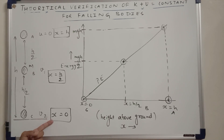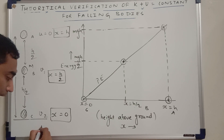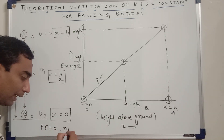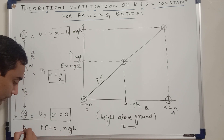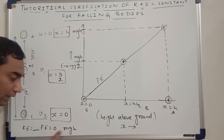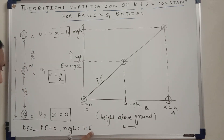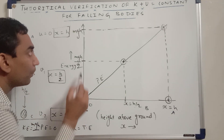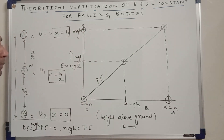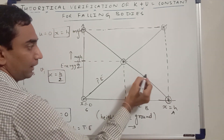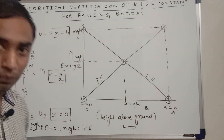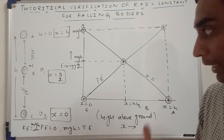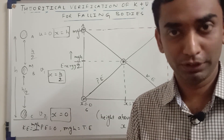At location C, potential energy is zero and total energy is MGH, so kinetic energy is MGH. At x equals zero the kinetic energy is MGH. Connecting the KE points also gives a straight line graph. So both the potential energy and kinetic energy graphs are straight lines, and their sum is always MGH. I hope I have taught you the entire concept. If you have any doubts, please post your comments in the comment section. Thank you for watching.